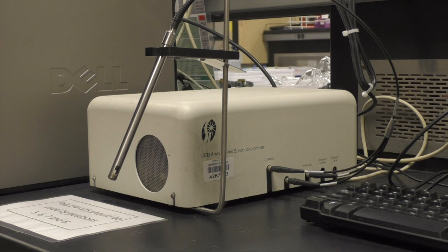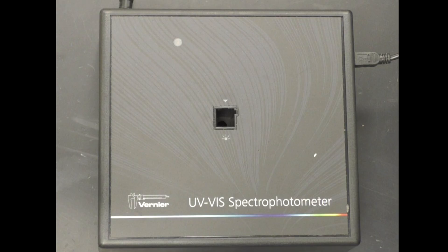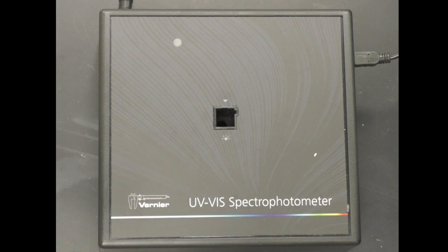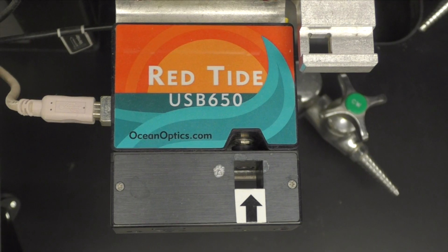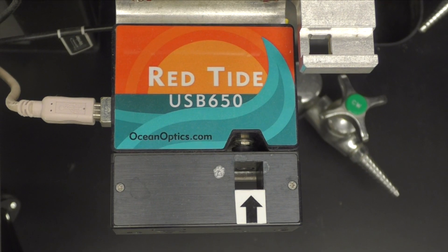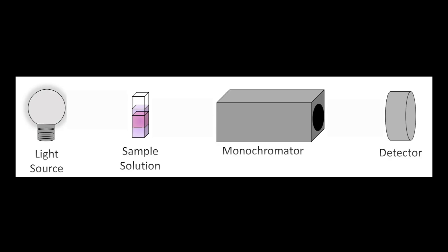Instruments which are capable of measuring absorbance and transmittance of light are called spectrophotometers. There are a wide variety of shapes, sizes, and complexities of components, allowing spectrophotometers to analyze many different types of samples. Despite their diversity, all spectrophotometers typically have four major components: a light source, the sample cell, a monochrometer, and the detector.